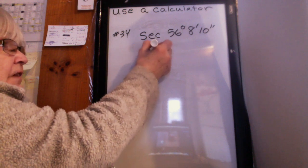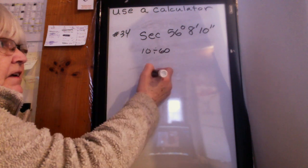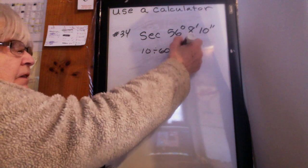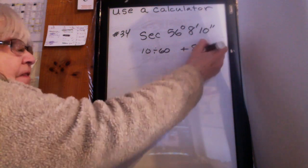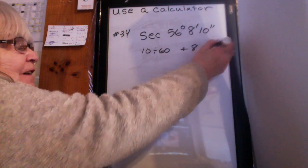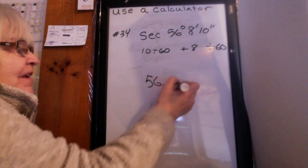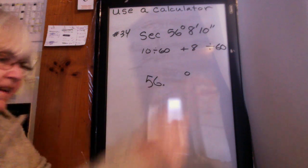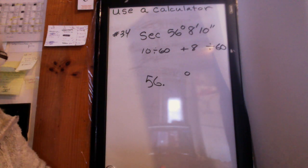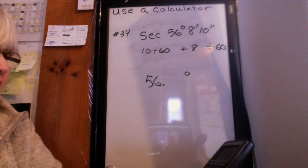I do 10 divided by 60, get the answer. Then I do plus eight. Then I get the answer, do divided by 60 again. And then I'm going to do 56 point that degrees and get the answer. So here's how we do it. Let's try it together on our calculator.